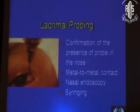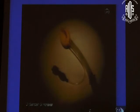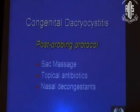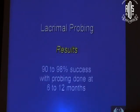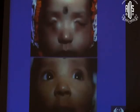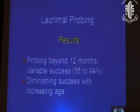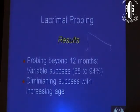Metal-to-metal contact confirmed by nasal endoscopy and syringing is confirmatory of successful probing. Post-probing, continue sac massage, topical antibiotics as required, and nasal decongestant spray for a week. Results of well-done probing show 90-98% success when done between 6-12 months. An example of bilateral dacryocystocele following probing shows complete resolution. Beyond 12 months, success rate dips by about 10% per year, reaching around 50%, because the remaining unresolved cases tend to have relative hard block or complete bony obstruction requiring DCR.